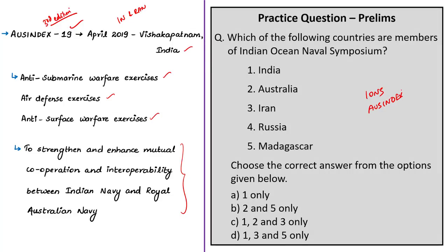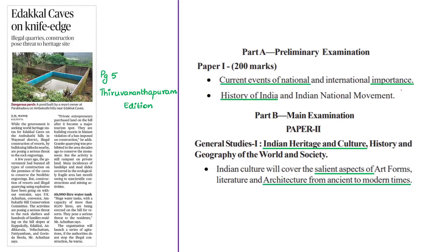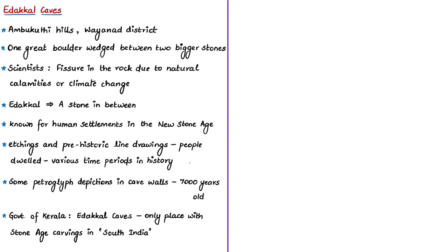This news article is about Edakal Caves in the state of Kerala. The syllabus relevant to the analysis is given here for reference. Edakal Caves are located on the Ambukuthi Hills in Wayanad district of Kerala at 1200 feet above mean sea level. This cave appears as one great boulder wedged between two bigger stones, forming a cave-like structure.